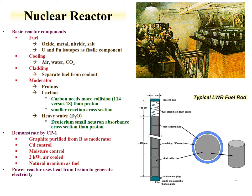The heat from reactors is used to produce electricity. Fission from the fuel produces around 200 MeV of energy, and that energy drives a turbine to produce electricity. In a typical light water reactor fuel rod, uranium is surrounded by a cladding material with a gap between the cladding and the uranium fuel. This gap allows some of the changes induced by the fission process in the uranium fuel to not influence the cladding material.